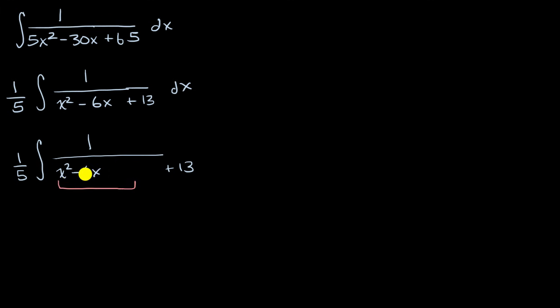We've done this before. You take half of your coefficient here, which is negative three, and you square that, so you want to add a nine here. But if you add a nine, then you have to subtract a nine as well. So this part is going to be x minus three squared, and then this part is going to be equal to a positive four.